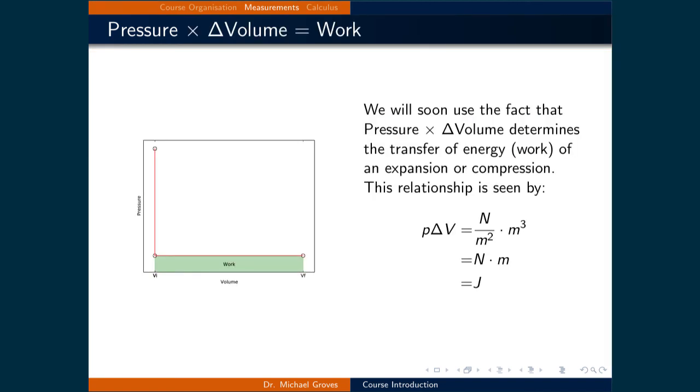The work performed by a system can be determined from a variety of inputs. For example, we will soon use the fact that pressure times a change in volume determines the transfer of energy, or work, of an expansion or compression of a gas. This relationship is seen by doing the unit analysis presented on the right. Pressure is in newtons per meter squared, and volume is in meters cubed. We can divide out the meters squared and be left with newtons per meter, or joules.